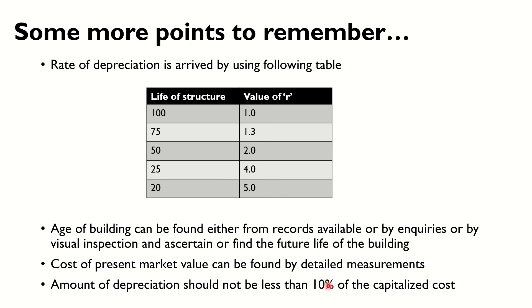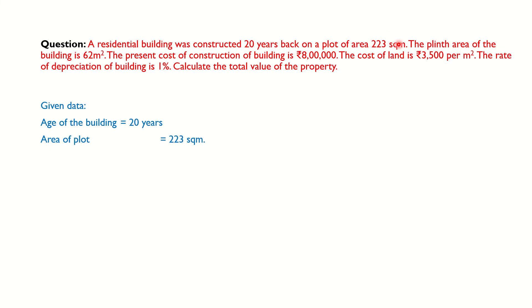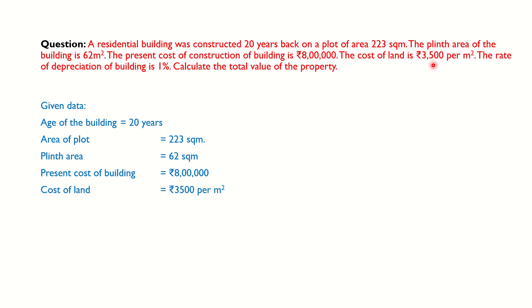Let us see an example. A residential building was constructed 20 years back on a plot area of 223 square meters. The plinth area of the building is 62 square meters. The present cost of construction is 8 lakhs rupees. The cost of land is 3500 rupees per square meter. The rate of depreciation of the building is 1 percent. Calculate the total value of the property.